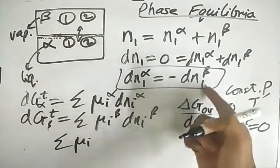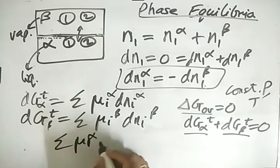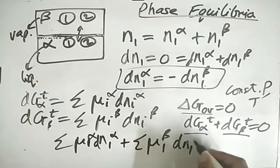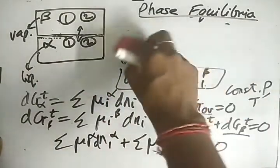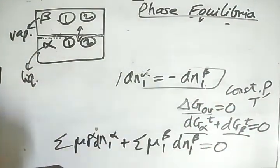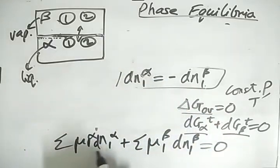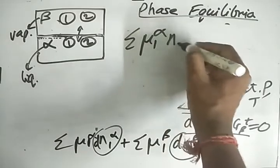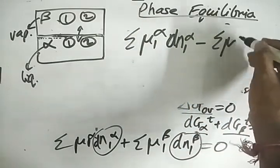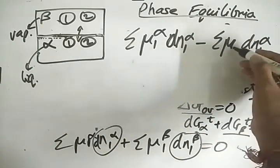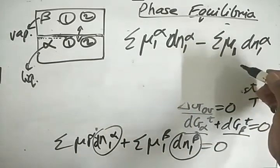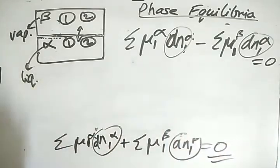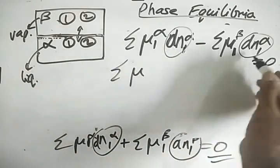Adding the two terms and substituting dn1-beta equals minus dn1-alpha, we get: summation of mu-1-alpha times dn1-alpha plus summation of mu-1-beta times dn1-beta equals zero. Replacing dn1-beta with minus dn1-alpha gives the summation of (mu-1-alpha minus mu-1-beta) times dn1-alpha equals zero.